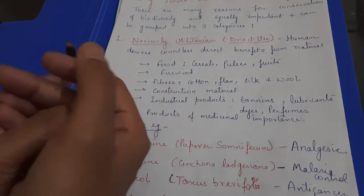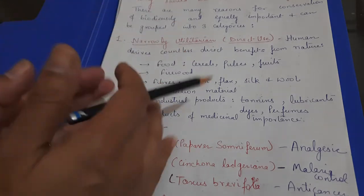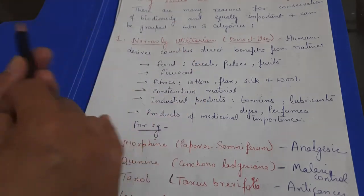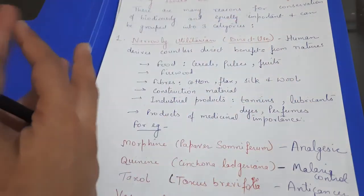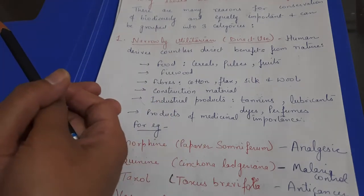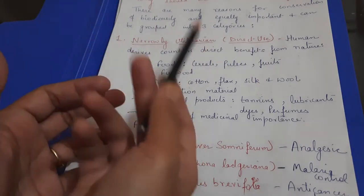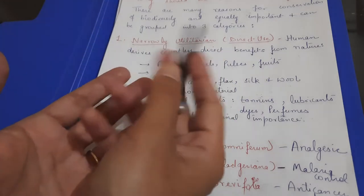Number one is narrowly utilitarian or direct use. We have to save our nature because nature, biodiversity, there are countless benefits that we have to take. For example, food. Where do we take food? Cereals, pulses, fruits, where do we take? Plants, trees, so nature.